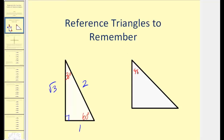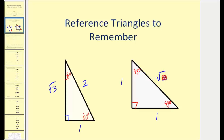Now if we talk about a 45-45 right triangle, the relationship among the three sides would be: the two legs would be one, and the hypotenuse would be the square root of two, or any multiple. This was covered in a previous video — if you don't know this, you might want to watch that first.